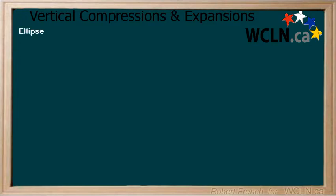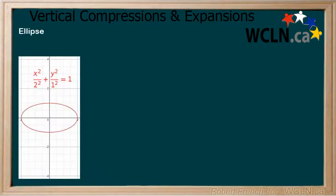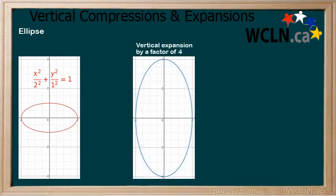Next, we will look at an ellipse. Here is both the equation and graph of an ellipse. Now apply a vertical expansion by a factor of 4. To do this, we multiply y by 1 over 4. We can see how the graph of the ellipse changes as well.